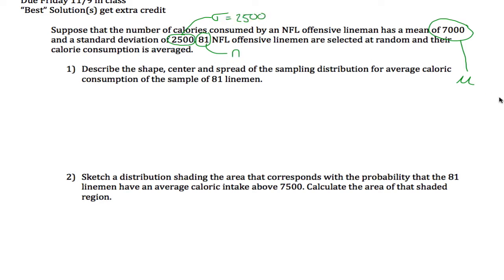I like to write down the pertinent information so you don't have to keep rereading these problems. For the first part, we need to describe the shape, center, and spread of the sampling distribution. First of all, the shape is approximately normal, and the reason why is because our value of n is greater than or equal to 30. That's the central limit theorem.